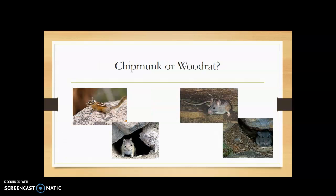Chipmunks versus wood rats — I don't think they really look all that similar. Your wood rat looks like a mouse on steroids with really big ears and a pretty long tail. We have a few different species of wood rats; the only one on your list is the bushy-tailed wood rat. Another really common one around here is the eastern wood rat, which extends up into our foothills, so there is some range overlap between the eastern wood rat and the bushy-tailed wood rat.